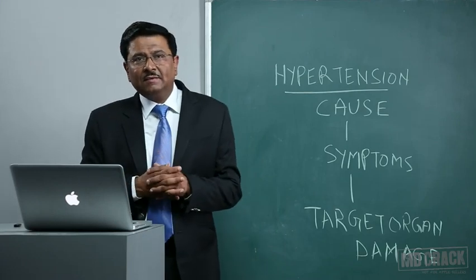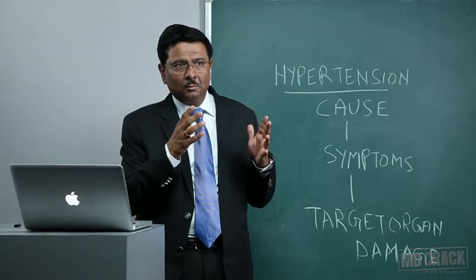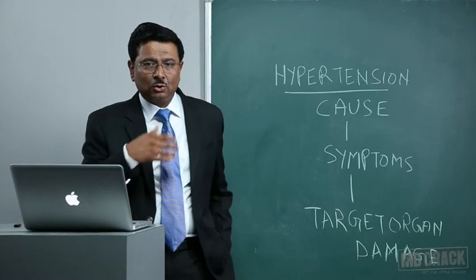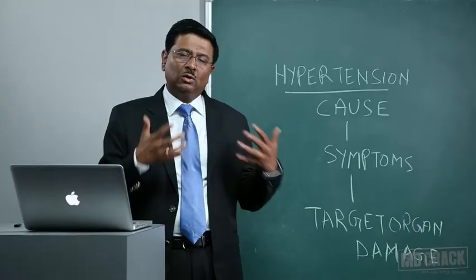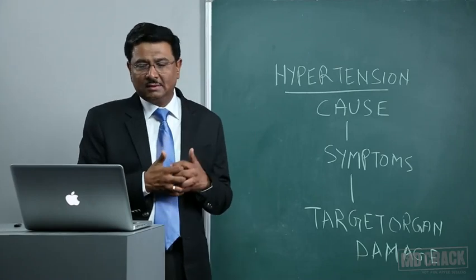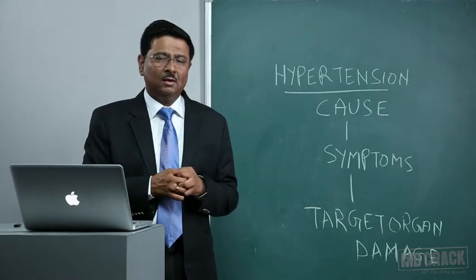Finally, certain drug combinations should be avoided in hypertension. Low-dose diuretic combined with a calcium channel blocker such as nifedipine should be avoided as there is no synergy between them. Beta blockers combined with verapamil or diltiazem can cause severe bradycardia. Beta blocker combined with ACE inhibitor is also not recommended. Ideally, two drugs from the same class should not be combined. These are the combinations to avoid when planning drug therapy for the treatment of hypertension.